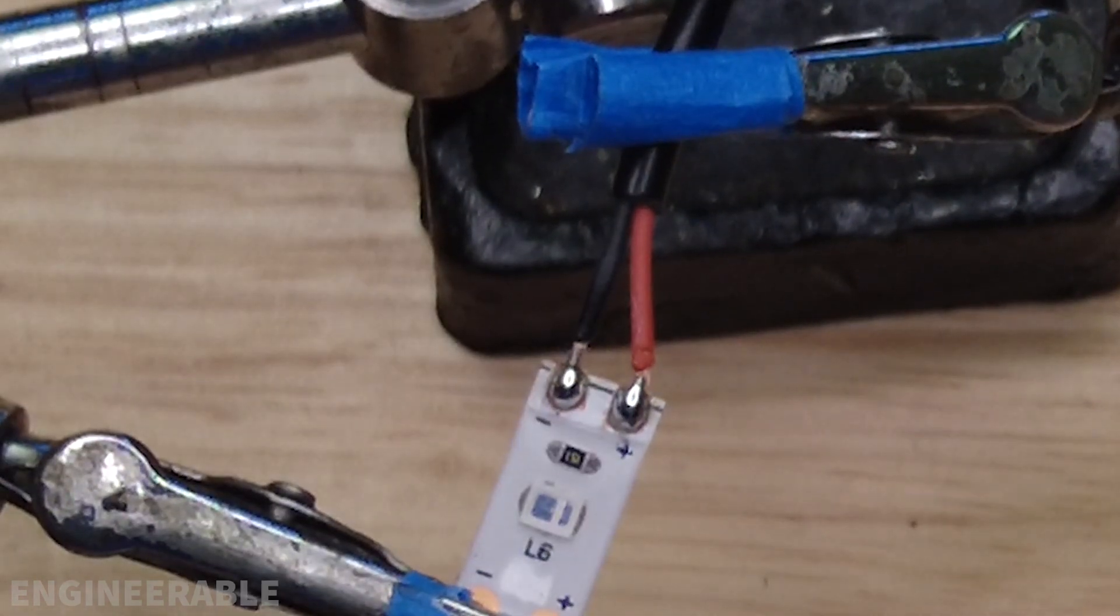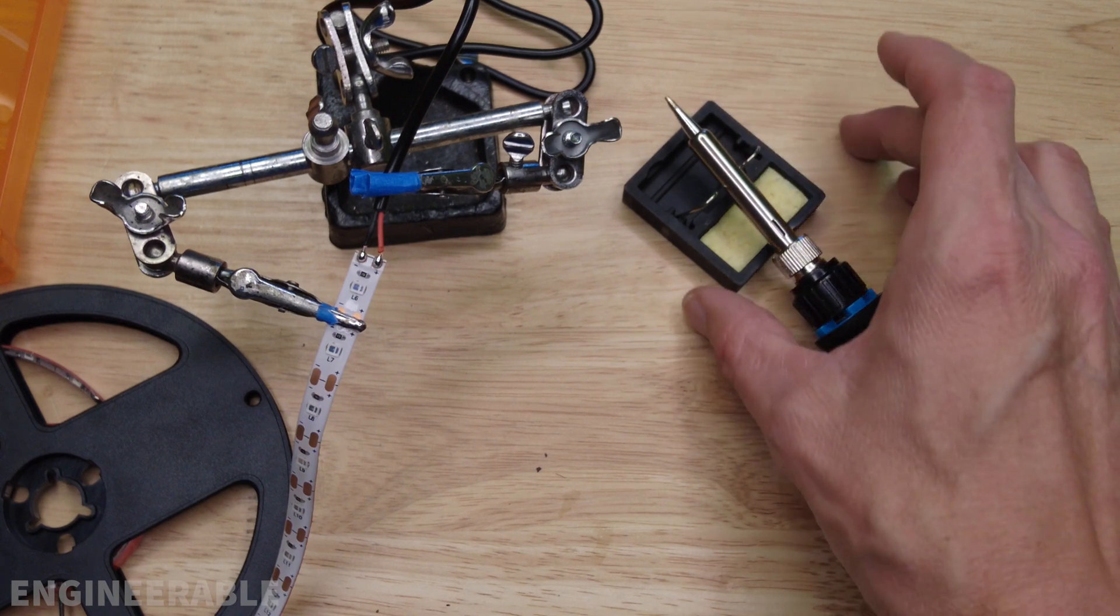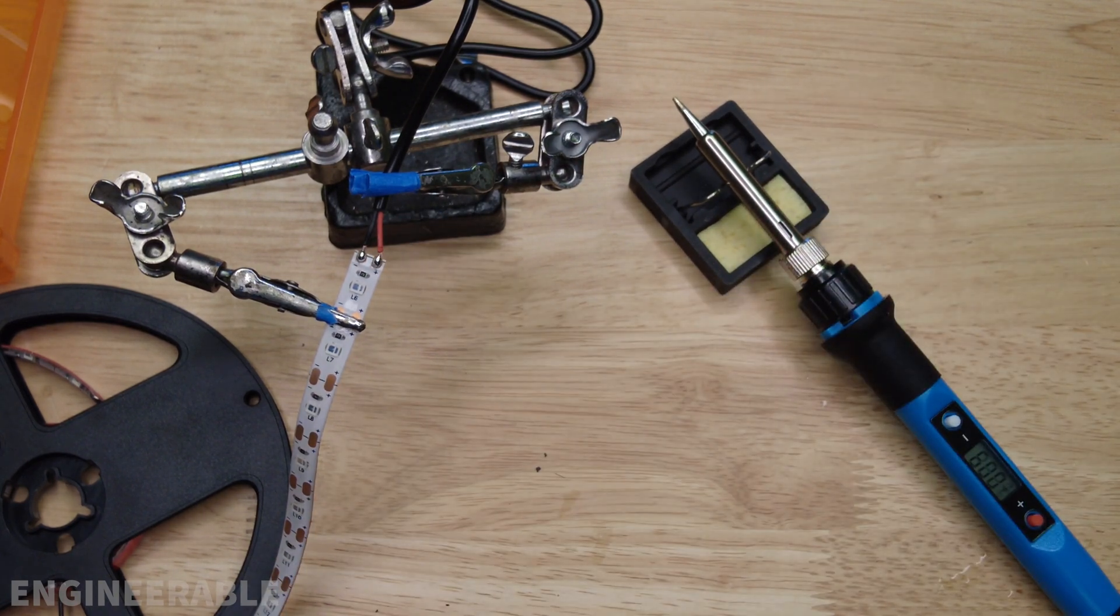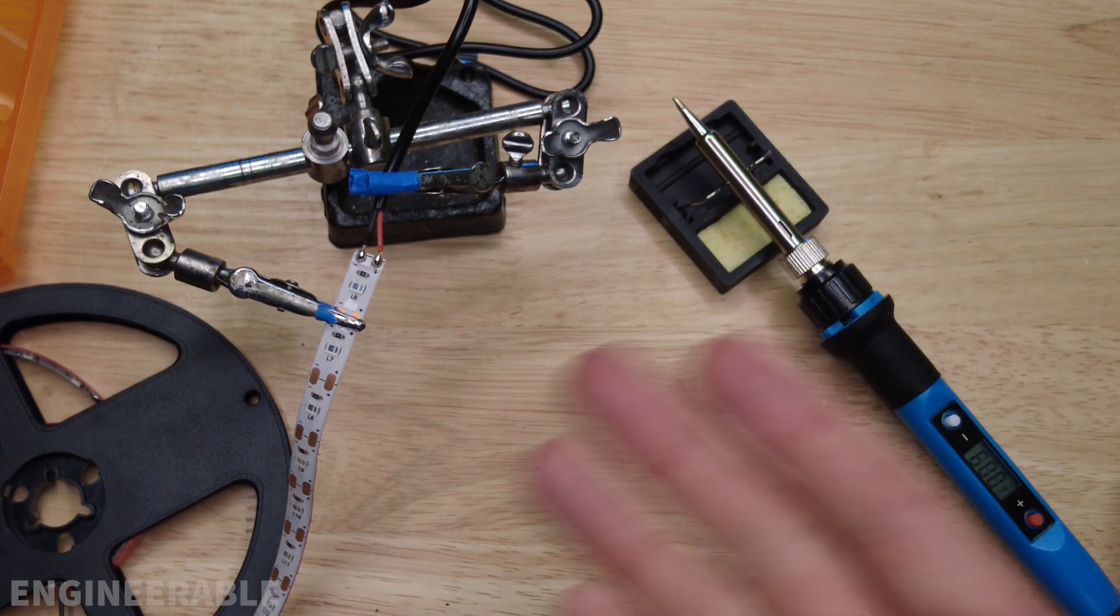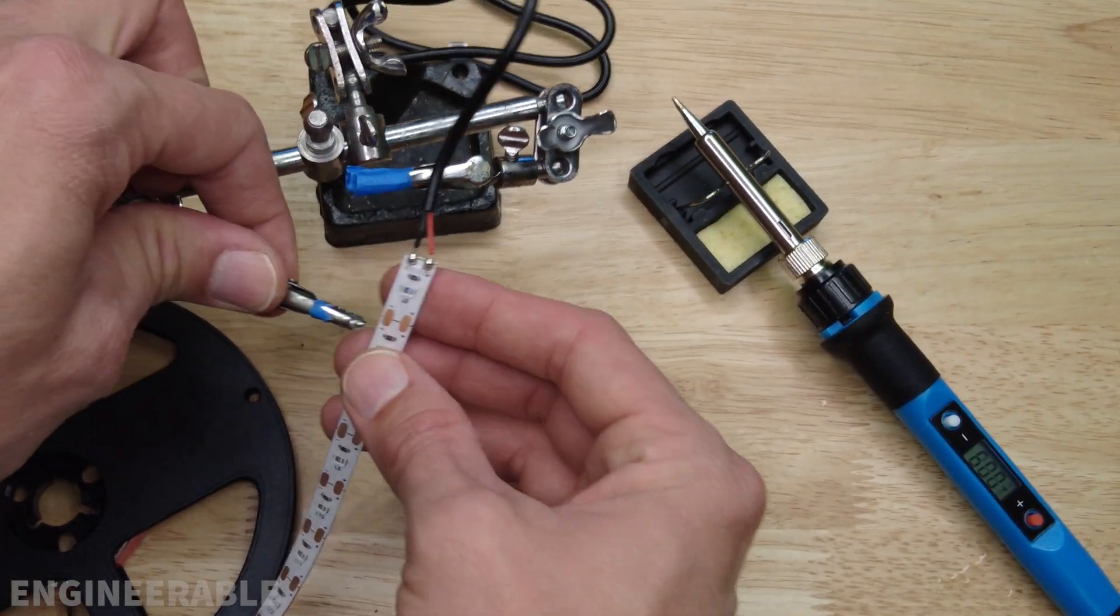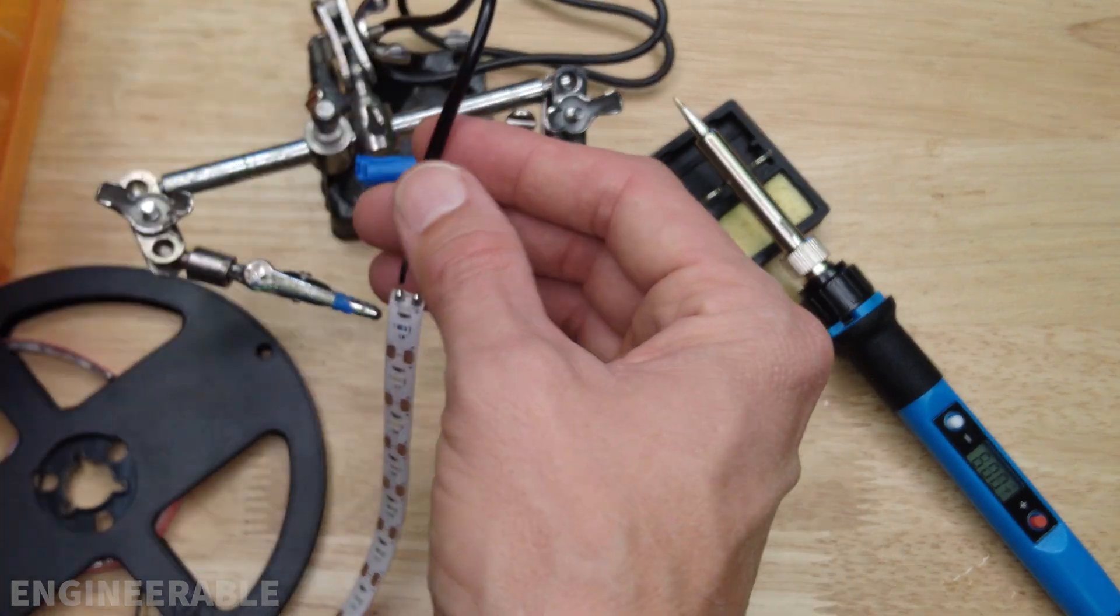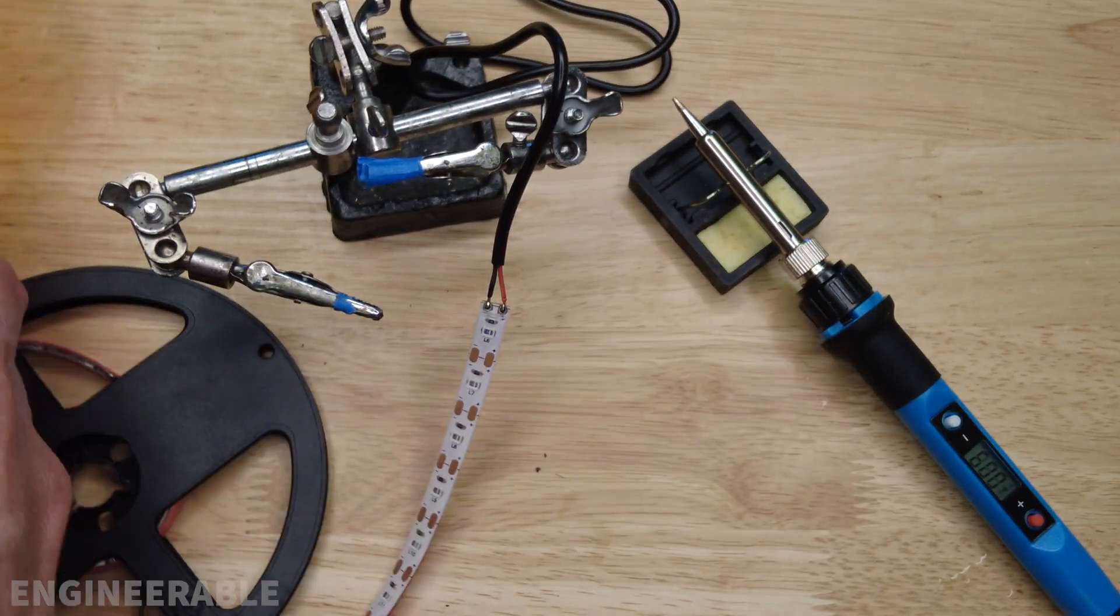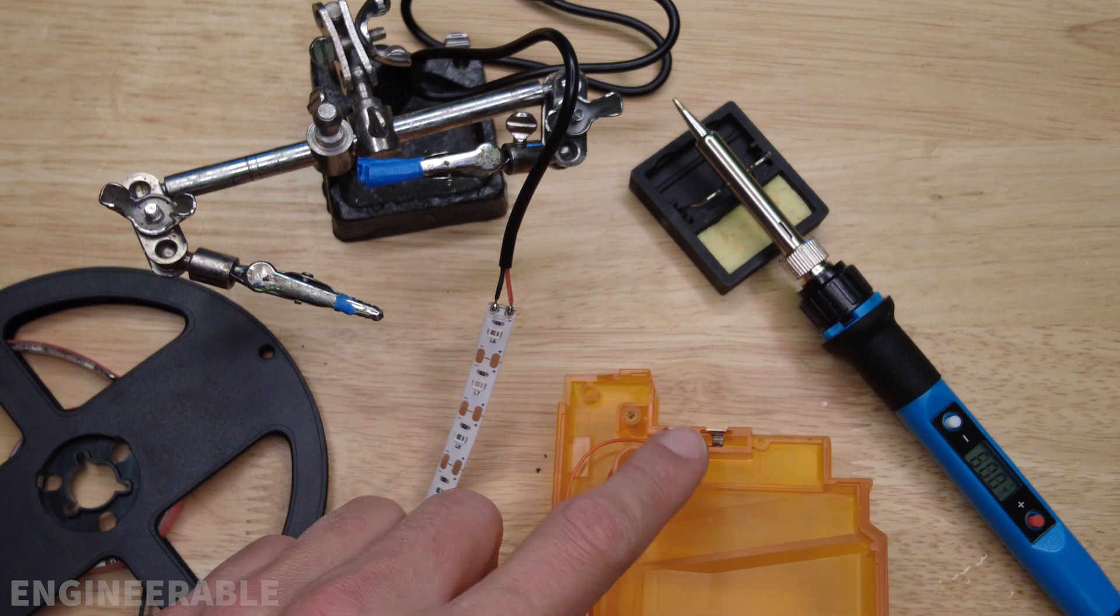So this soldering iron is perfectly suitable for doing gel blaster mods like this. Very inexpensive, easy to use. It was super easy to solder these wires onto the end of the LED strip. And then I'm going to solder the other end of the wires onto these contacts here.